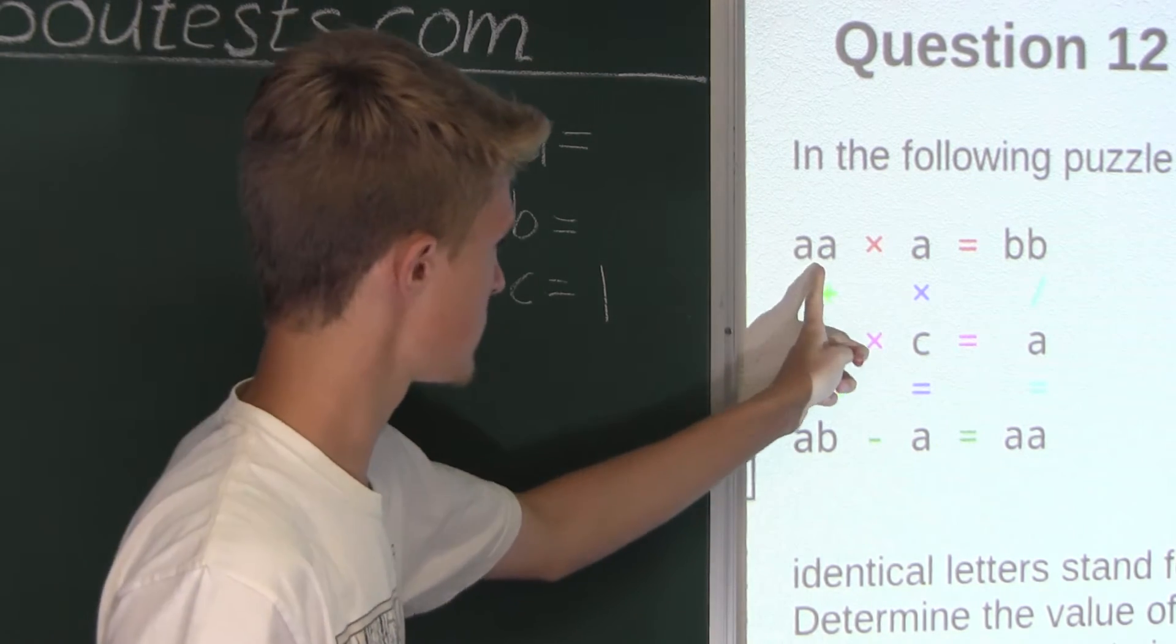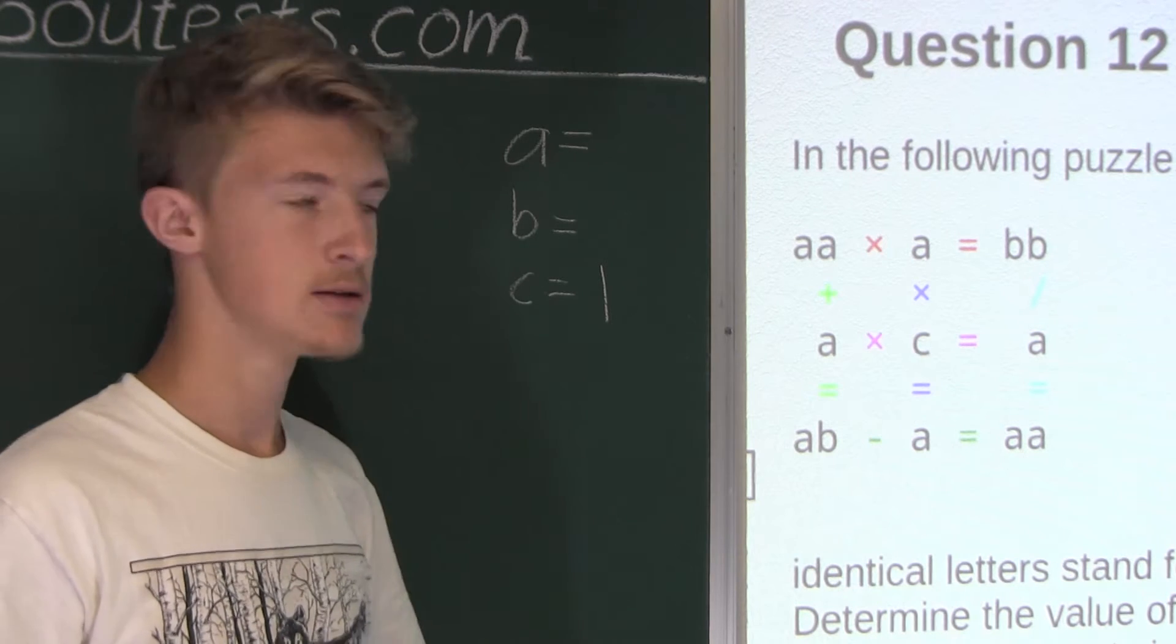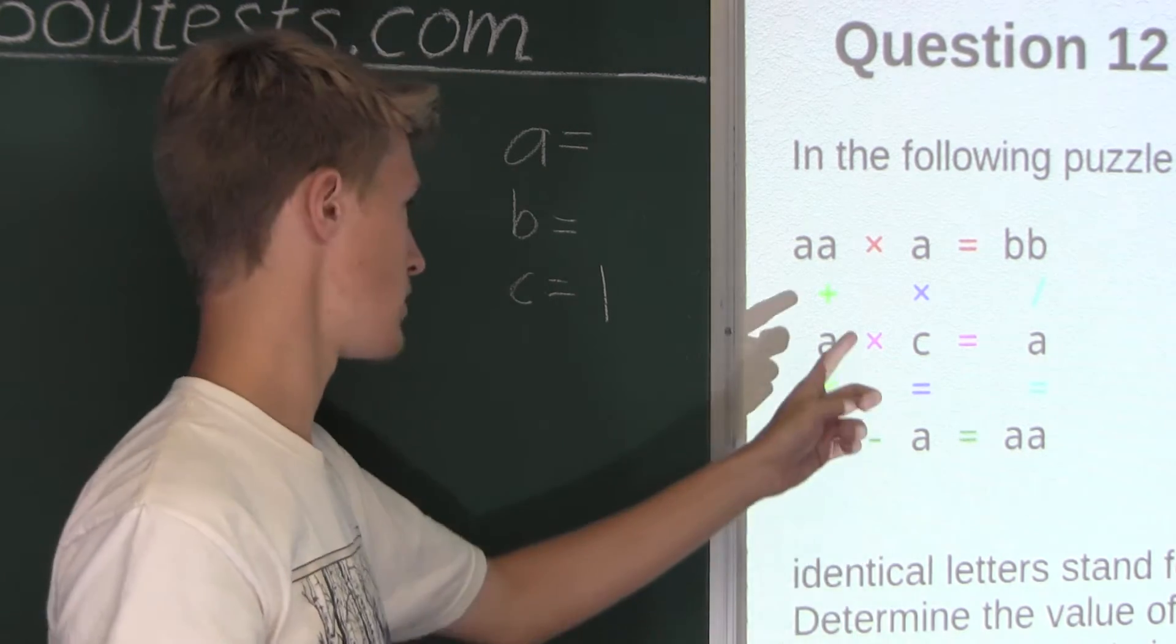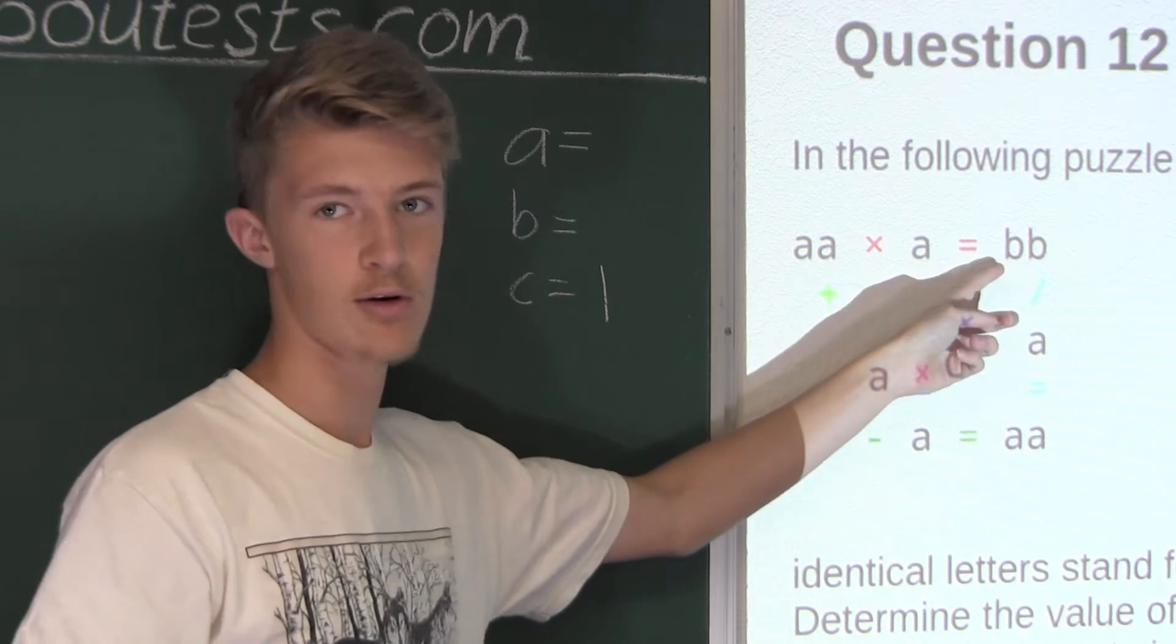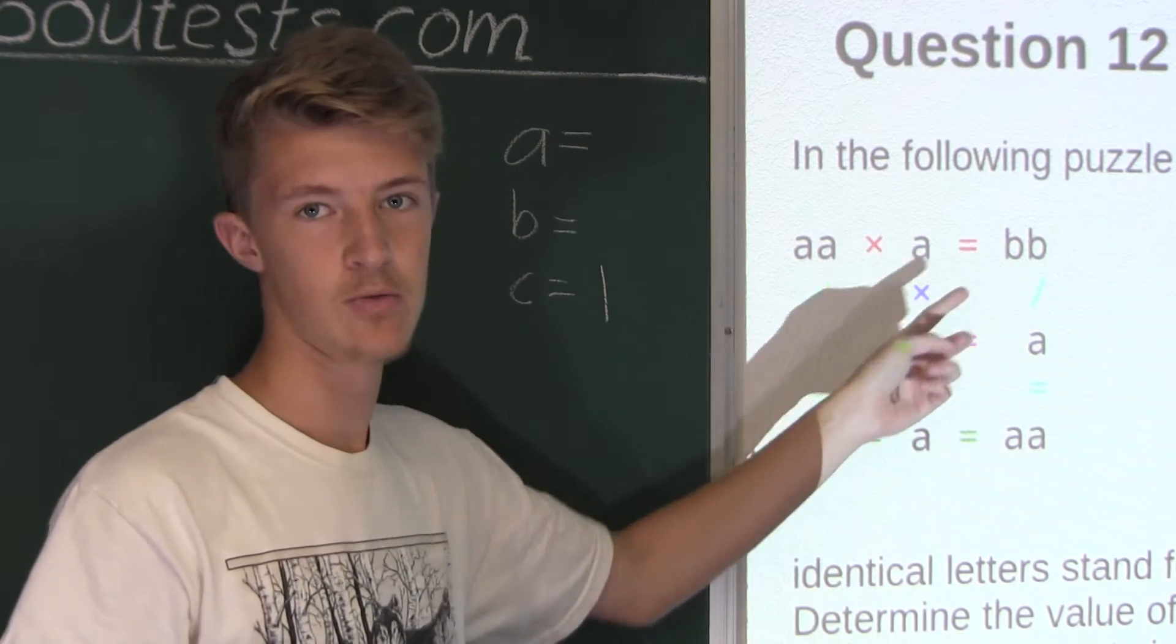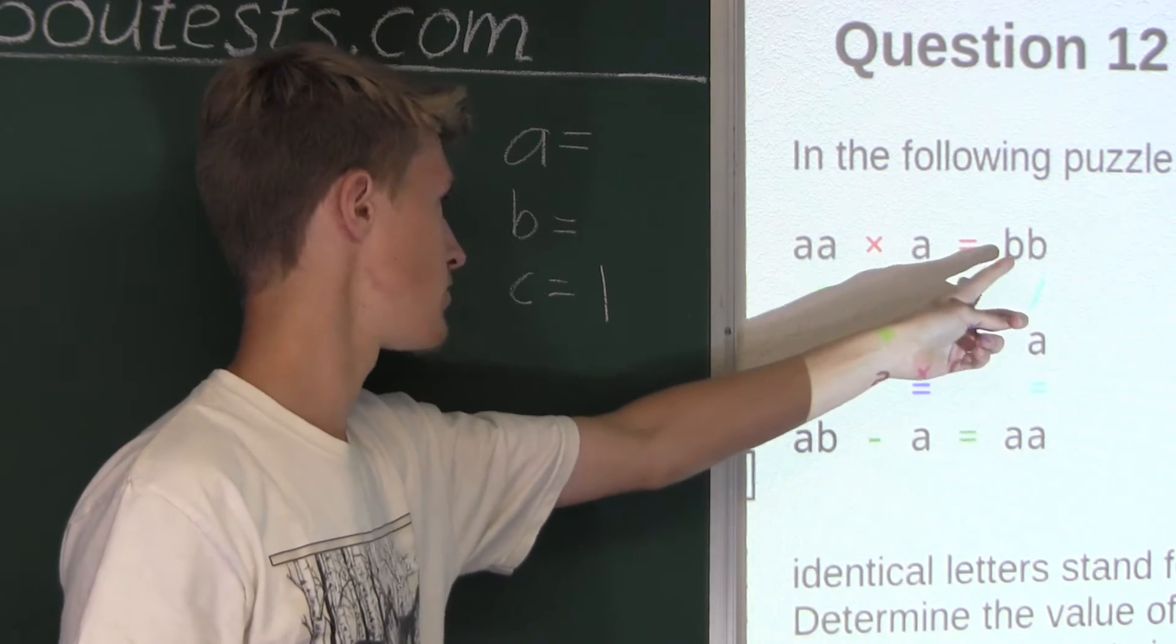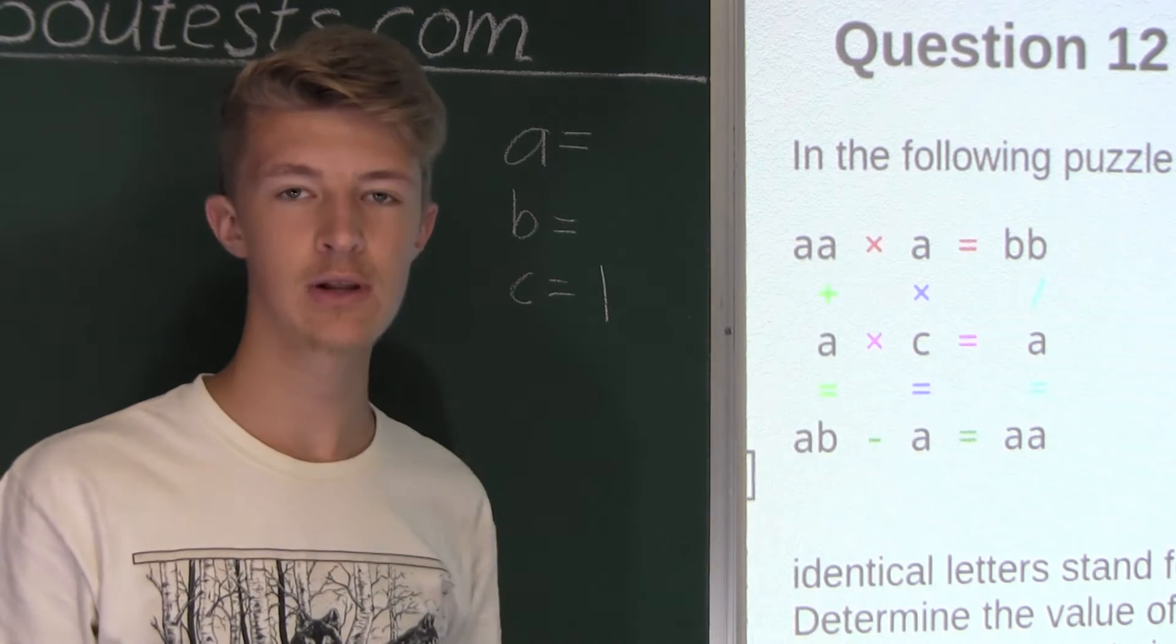Alright, now let's look at this top equation. We have AA times A is equal to BB. So now we already know that C is equal to one, so A cannot be one. So let's start with A being two. So since this is AA, that's a two-digit number, so that would be 22. So we would have 22 times 2 is equal to 44. So that would work. Now let's try 3. We would have 33 times 3 is equal to 99, which would also work. Now if we put A is 4, we would have 44 times 4, and that would be a three-digit number. But here B is only a two-digit number. So therefore, we only have to check for A being either 2 or 3. So let's start with A being 2.